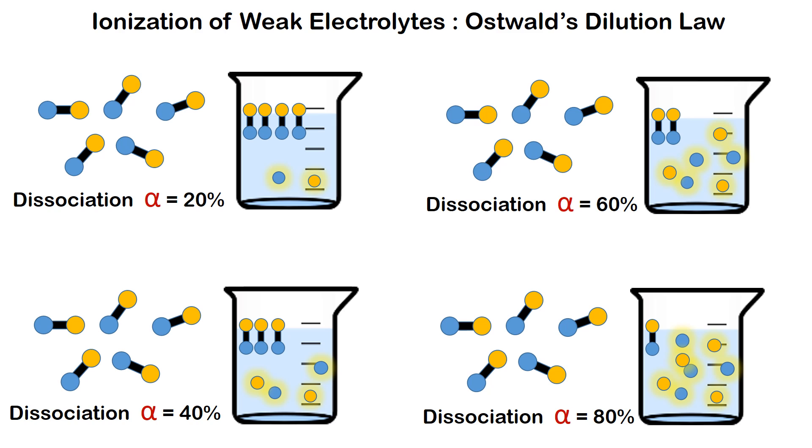Degree of dissociation is the amount of dissociation of electrolyte in water. For example, out of five molecules which are put in water, only one has dissociated and therefore the dissociation is 20%. Here two out of five have dissociated so the dissociation is 40%. Here it is 60% and in this case it is 80%.